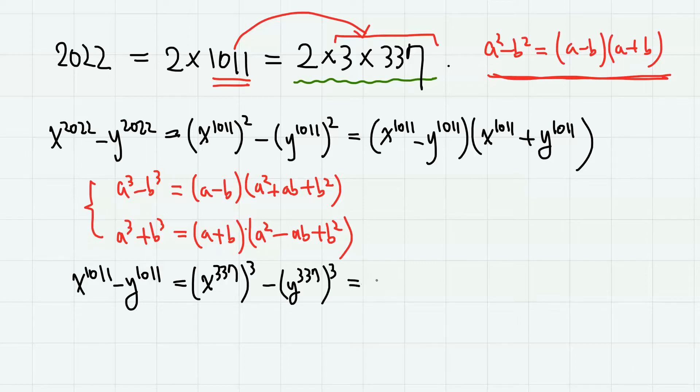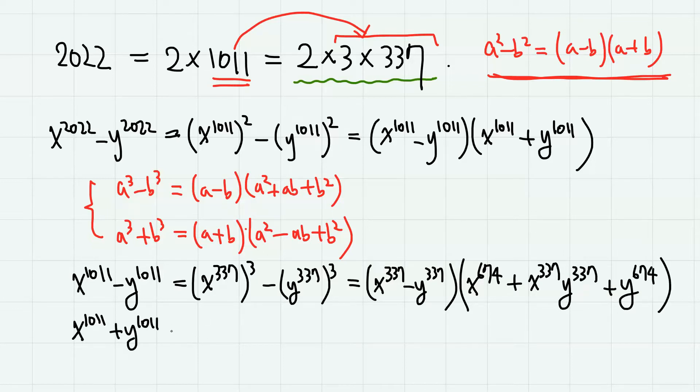So by our formula, we have x to the 337 minus y to the 337, times x to the 674 plus x to the 337 times y to the 337 plus y to the 674. And we can do similarly for x to the 1011 plus y to the 1011.